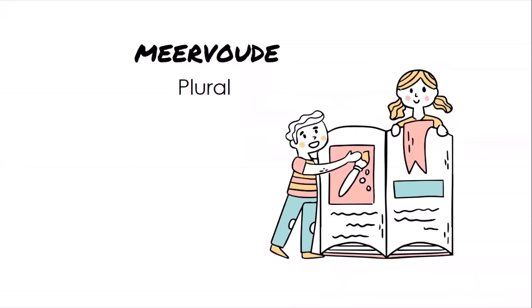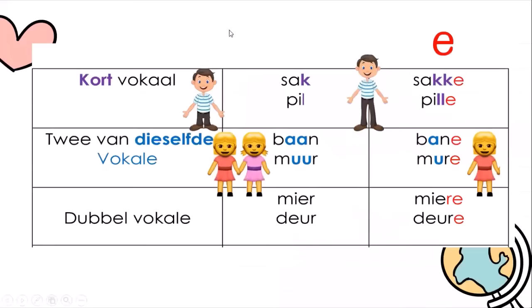Meervoud - plural. That is when we say 'ons het een hond maar baie honde' - one dog but many dogs. In English, to make something plural we usually add an S. The basic way to make an Afrikaans word plural is to add an E. There are obviously exceptions, and different rules we need to apply to a word before we can just add an E.